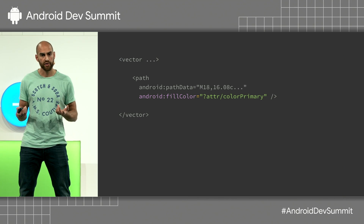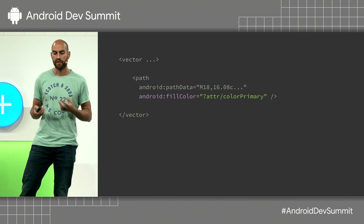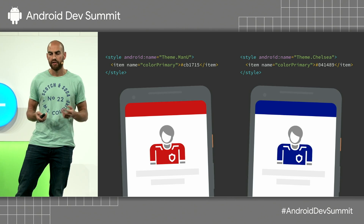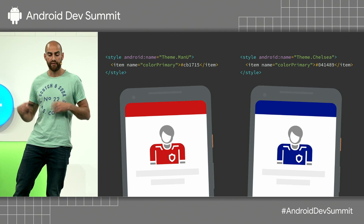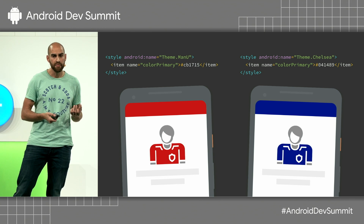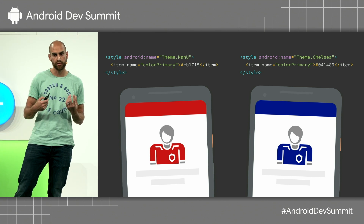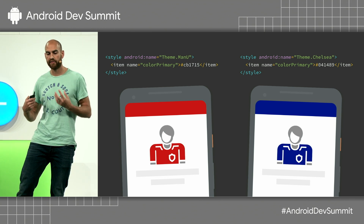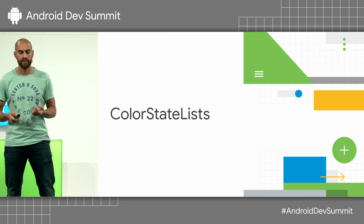You can also use theme colors directly in the fill or stroke. In this example, I'm going to use color primary. Say you have different screens in your app — like a sports app which uses a theme for a given team. You can reference that theme color, so you can have a single drawable where just parts of it get colored based on the theme, which can be useful. That was theme colors.